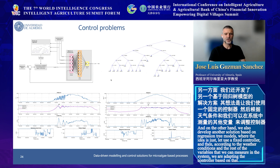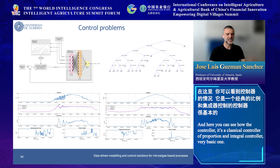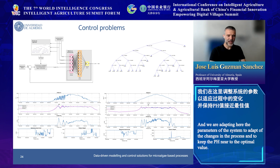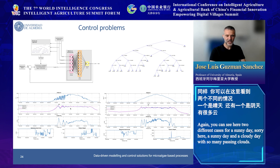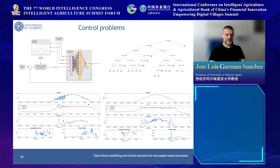We also developed another solution based on regression tree models. The idea is to use a fixed controller — a classical proportional-integral controller — and then, according to weather conditions and other measurable system variables, adapt the controller parameters to handle changes in the process and keep the pH near the optimal value. Results are shown for a sunny day and a cloudy day with many passing clouds.